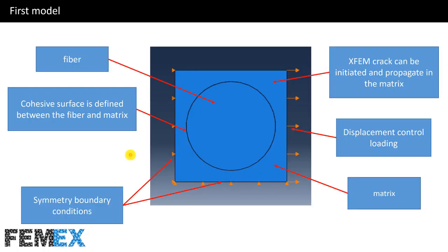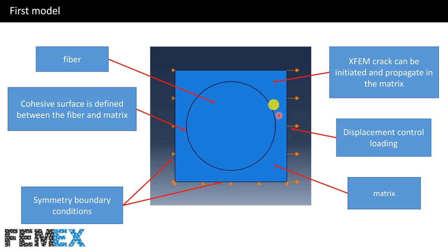Here you can see the geometry of the first model. This is the fiber and this is the matrix. On this edge and this edge we will define symmetry boundary conditions. On this edge we will apply displacement-controlled loading. The cohesive surface is defined between the fiber and matrix here, and an XFEM crack can be initiated and propagated in the matrix.